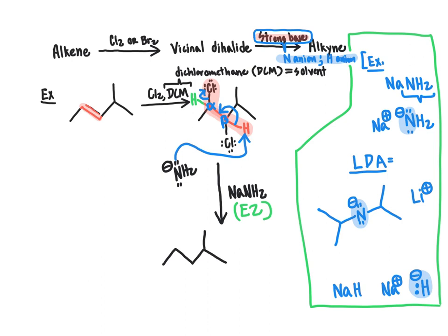This is a throwback to the E2 elimination reaction from a few chapters ago. We're not worrying about stereochemistry here since we're ultimately headed for an alkyne, which is linear at the alkyne group. The product has a carbon-carbon double bond formed by taking that carbon-hydrogen bond and bringing it over using the electron-pushing arrow.